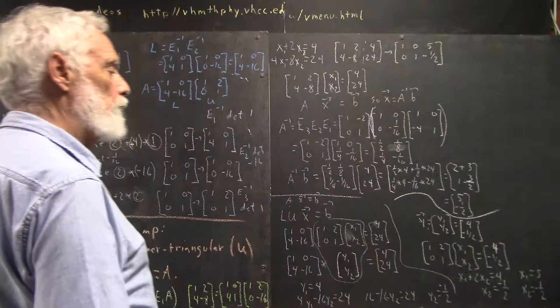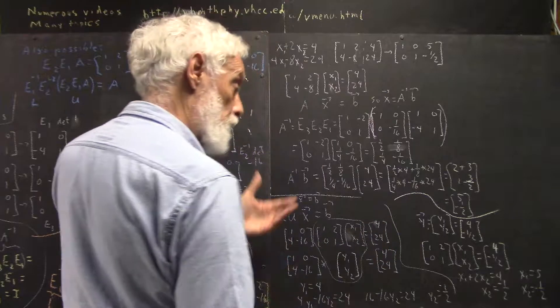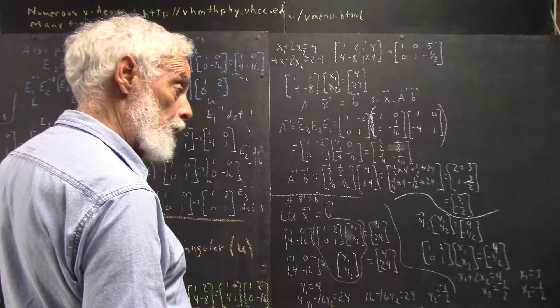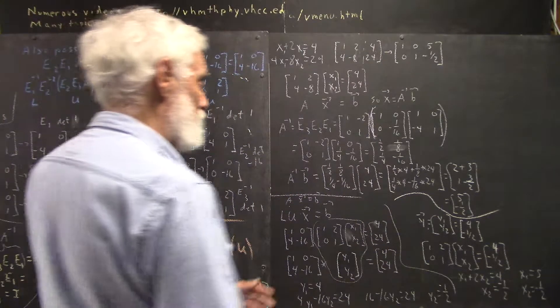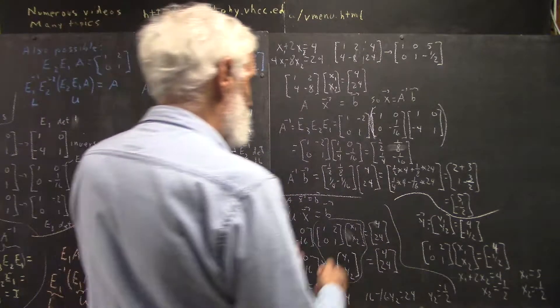We can't solve the whole thing at once, so what we do is we just say, well, this matrix times something is going to equal the matrix 4, 24, or the column vector 4, 24.